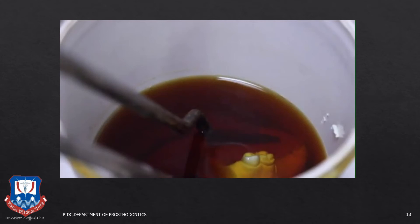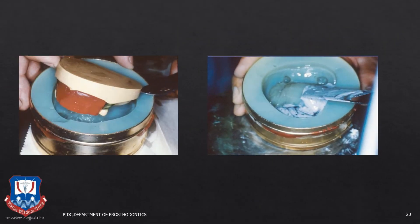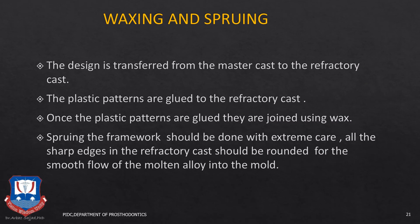The refractory cast is then dipped in beeswax because refractory casts are highly rough and porous owing to the particle size of the refractory material, so in order to get a smooth surface this last step is carried out. Once the refractory cast is obtained, the waxing and spruing can begin. The design which was drawn on the master cast is then waxed up using prefabricated wax patterns and different gauges of casting waxes onto the refractory cast.